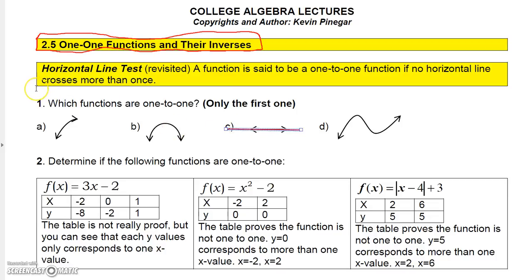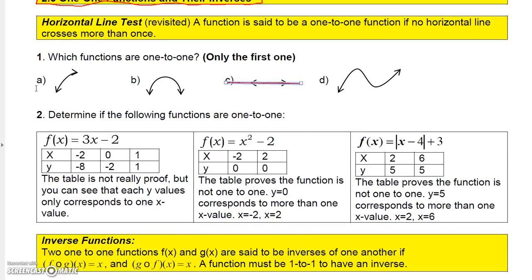So why are we concerned about functions being one-to-one? The reason is that if we want to find inverses, we have to realize that the function must be a one-to-one function.